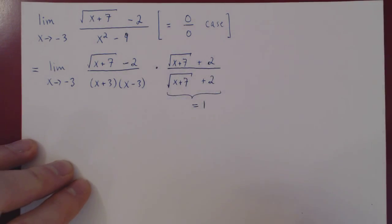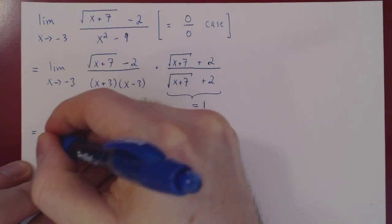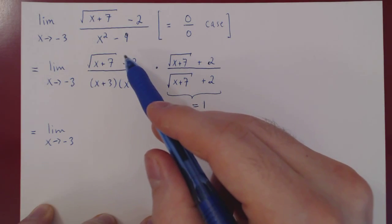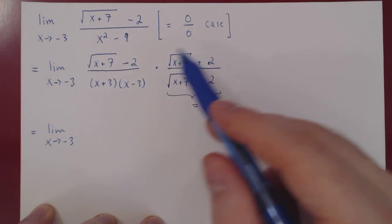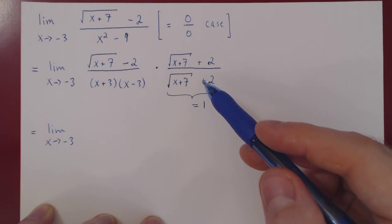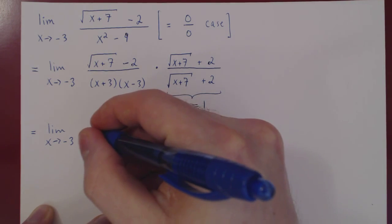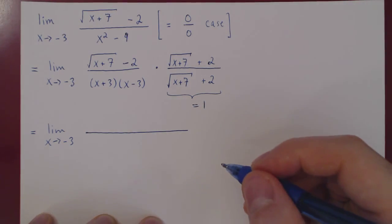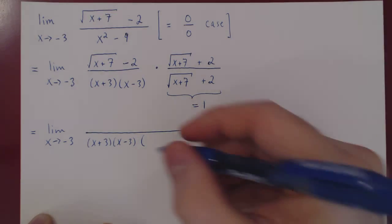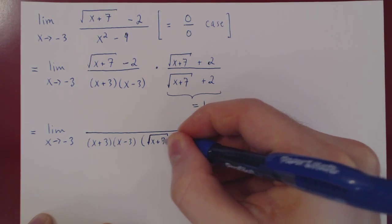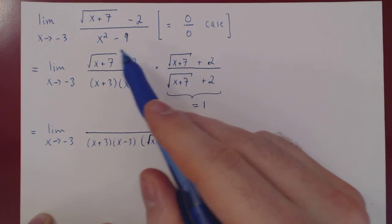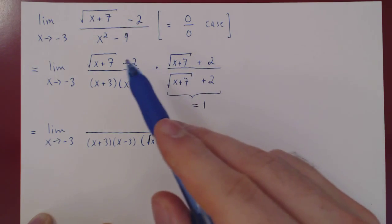Where do we go from here? The idea is we always end up multiplying the term involving the square root with its conjugate, and we'll see a really nice simplification. As for the denominator, we don't multiply it out — it's already fully factored, we leave it as it is. So let's rewrite first the denominator, fully factored as x plus 3 times x minus 3, times all of root of x plus 7 plus 2. Only multiply the term with the square root and its conjugate — the same expression but changing the sign.